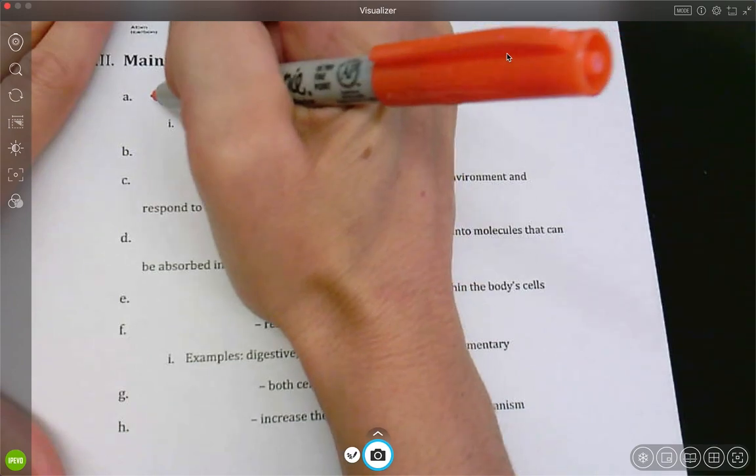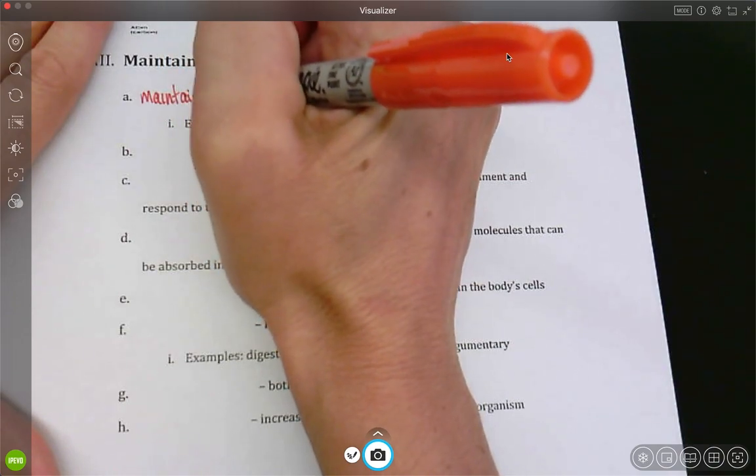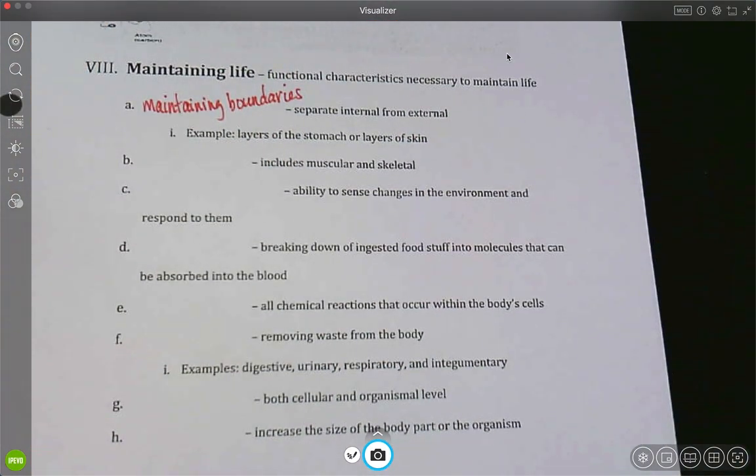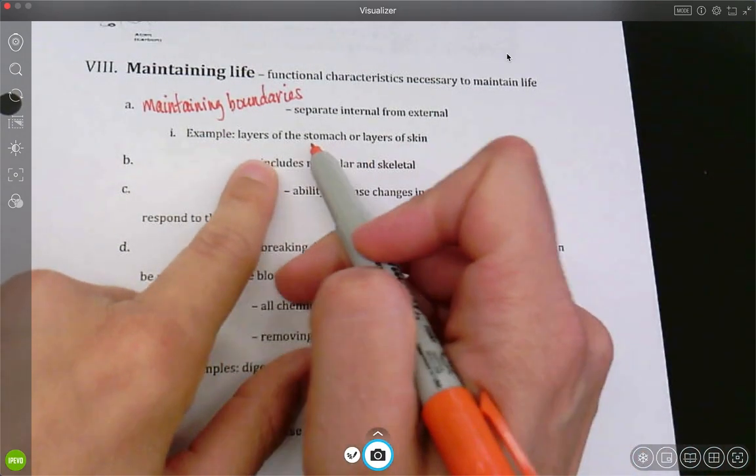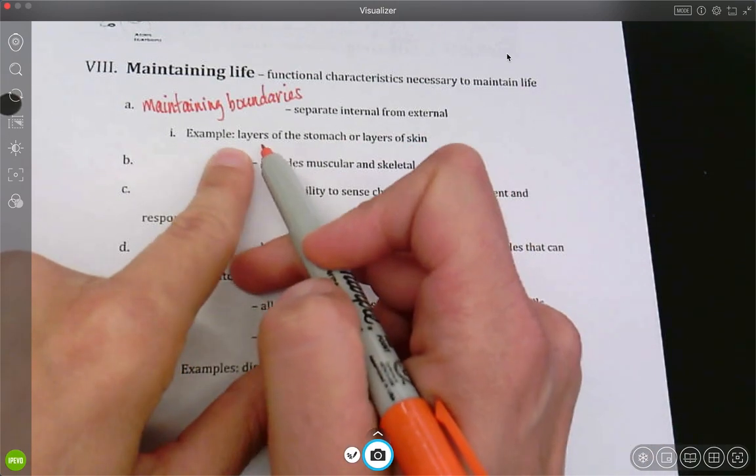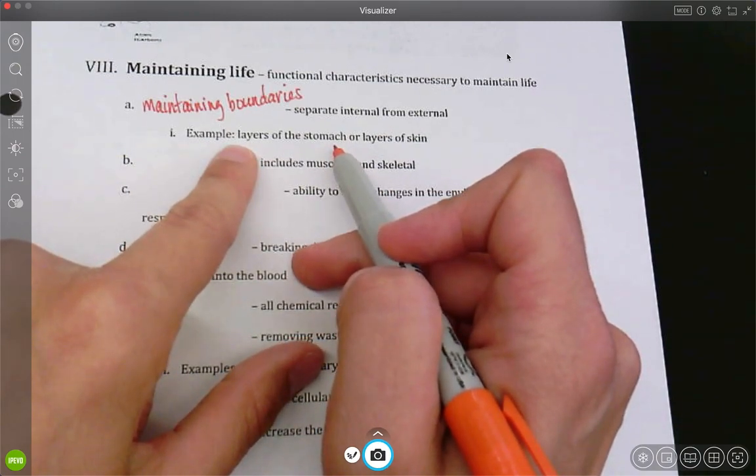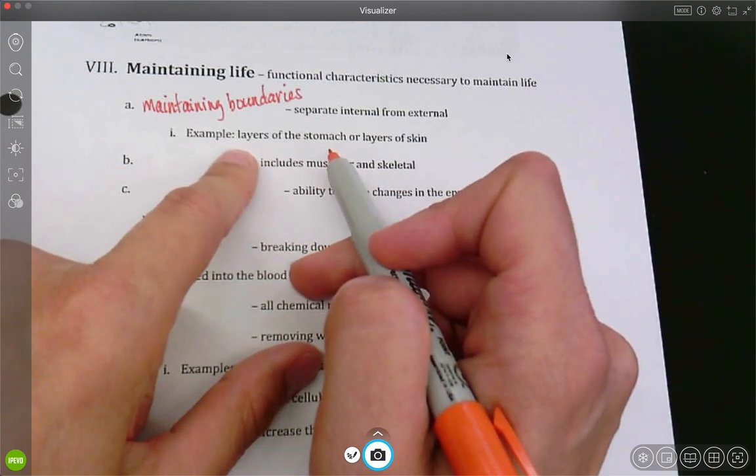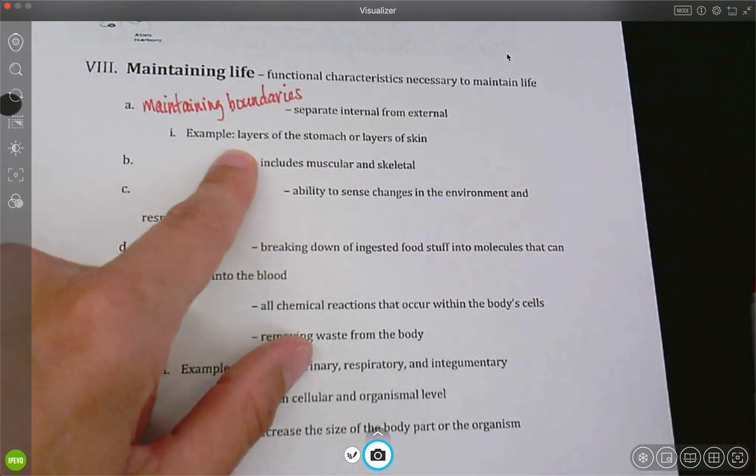So the first one we have is maintaining boundaries. What does that mean? It separates internal from external. An example would be the layers of the skin, so I separate the outside world from my inside world. Another example would be the layers of the stomach. My stomach is really acidic. I want to keep that acid in my stomach and not anywhere else, so there are going to be four layers there that help keep that acid in my stomach. So not just from the outside in, but also on the inside keeping specific things in spots that they need to be.